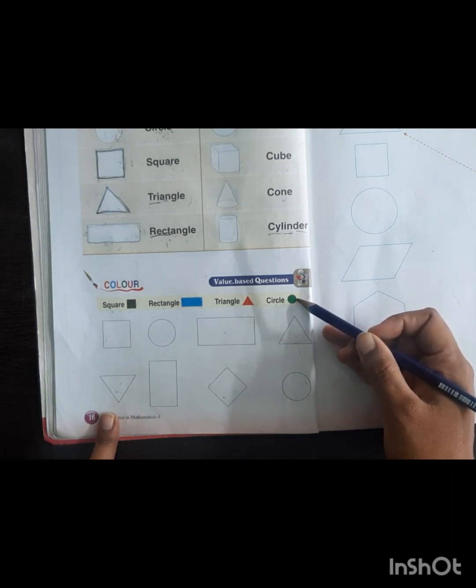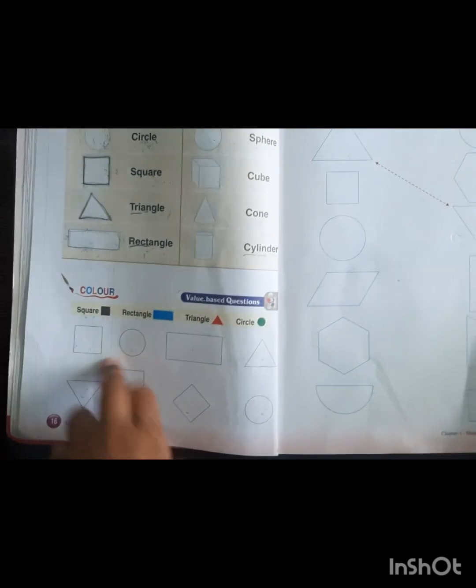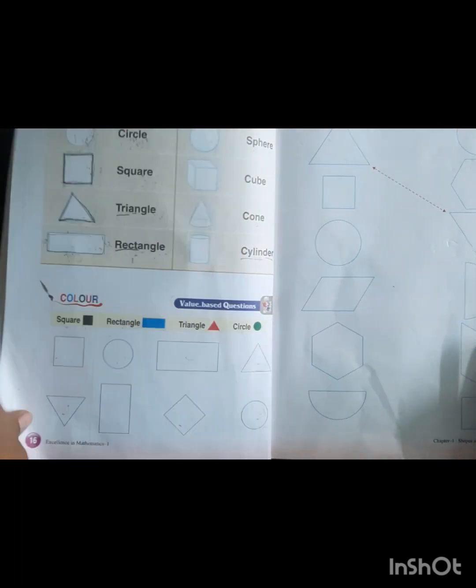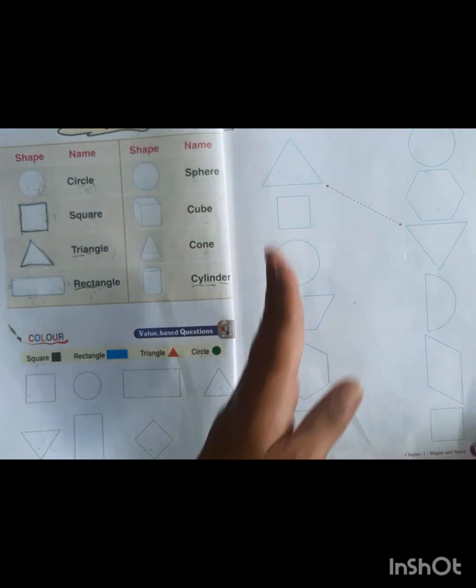Circle has green color, so we will fill green color in given circles. Match the same shapes, left side and right side. We have to match these shapes.